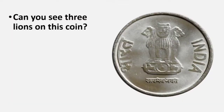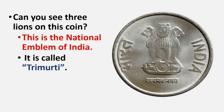Children, can you see three lines on this coin? This is the National Emblem of India. It is called Trimurthy. What is it called, children? It is called Trimurthy.